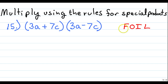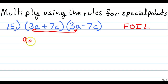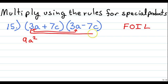In the FOIL method, F means distribute the first two terms to one another: 3a times 3a gives 9a squared. O means multiply the outer two terms: 3a on the outside and negative 7c on the outside of the second binomial. 3 times negative 7 gives negative 21, and a times c carries down as ac.